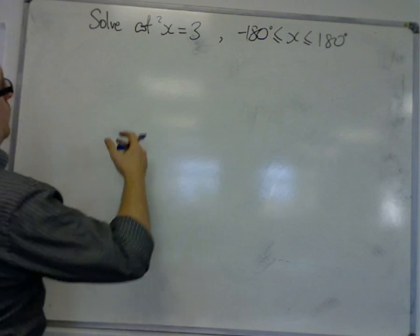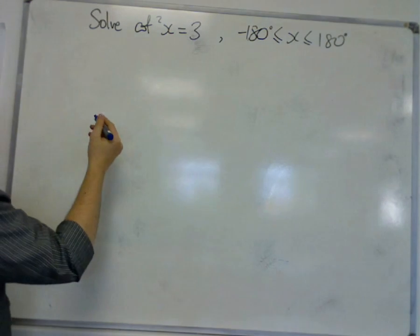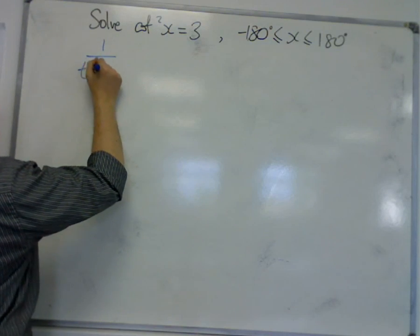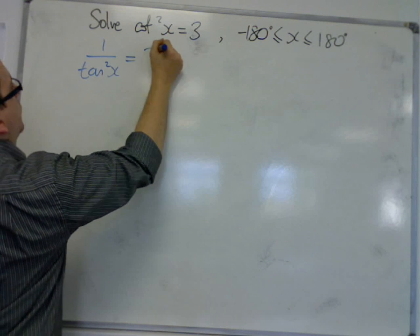So we know that cot is 1 over tan, so this means that we have 1 over tan squared x is equal to 3.